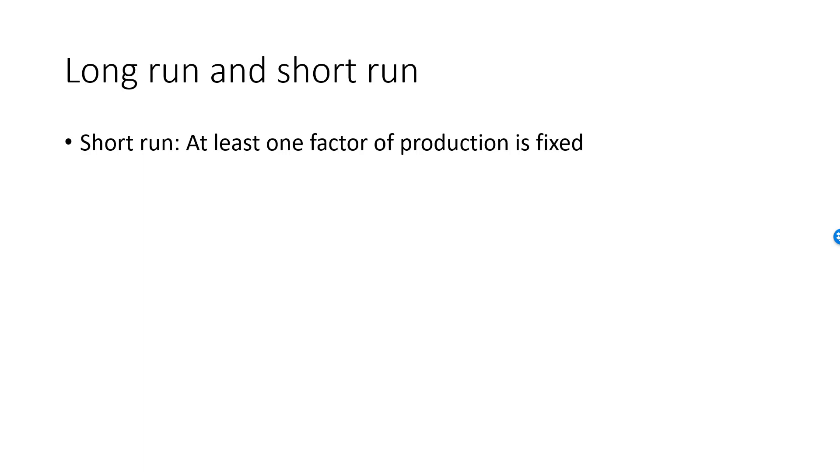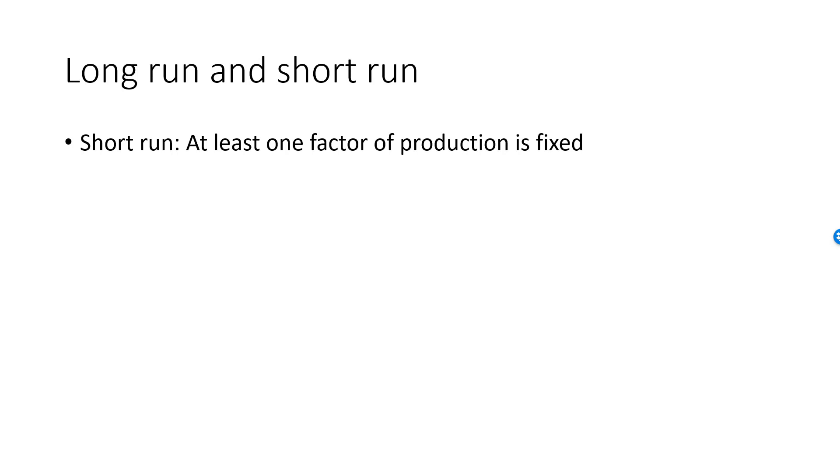So far they have been free to select any amount of each production factor. In reality, the decision problem faced by the firm is a repeated problem, and it may be difficult to change the amount of a production factor from one decision to the next. If the amount of at least one production factor is fixed at a given level, then we say that the firm is facing a short run decision problem. If the firm is free to select any amount for all production factors, then they are facing a long run decision problem.